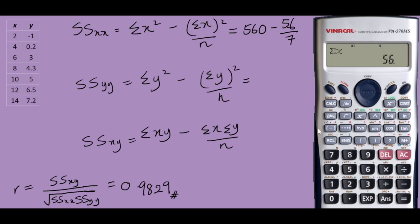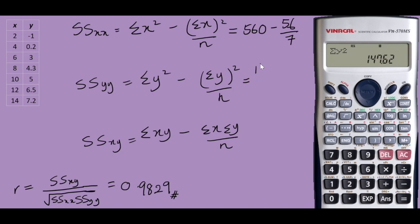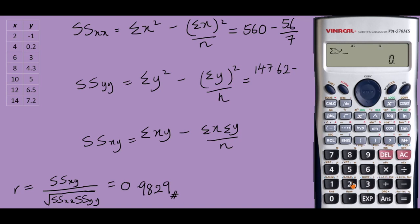For sum of y squared, press Shift 1 and go to the right-hand side, selecting 1. This gives 147.62, minus the sum of y — which is 25.2 — squared, over 7.